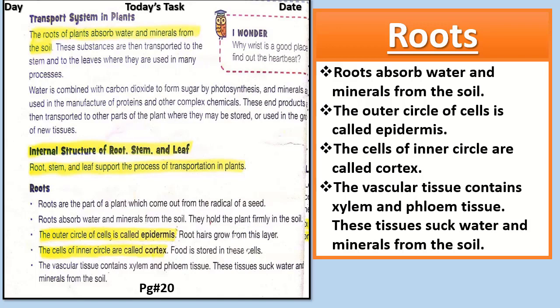The next topic is the Internal Structure of Root. Roots are the part of a plant which come out from the radical, often the seed. Roots absorb water and minerals from the soil and they hold the plant firmly in the soil. The outer circle of cells is called epidermis. The cells of the inner circle are called cortex. The vascular tissues contain xylem and phloem tissues, and these tissues suck water and minerals from the soil.